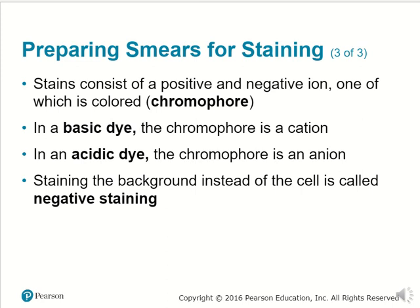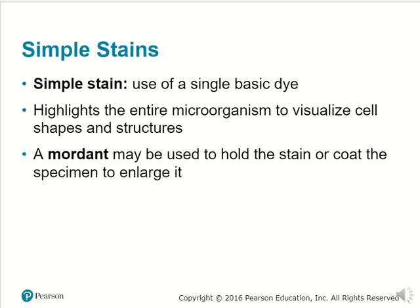Negative staining means staining the background instead of the cell — staining the medium that the specimen is located in, so you can distinguish the specimen from the background. A simple stain is just a basic dye that highlights the cell and maybe certain shapes and structures on the cell. A mordant is something that helps hold the stain or coat to the specimen.